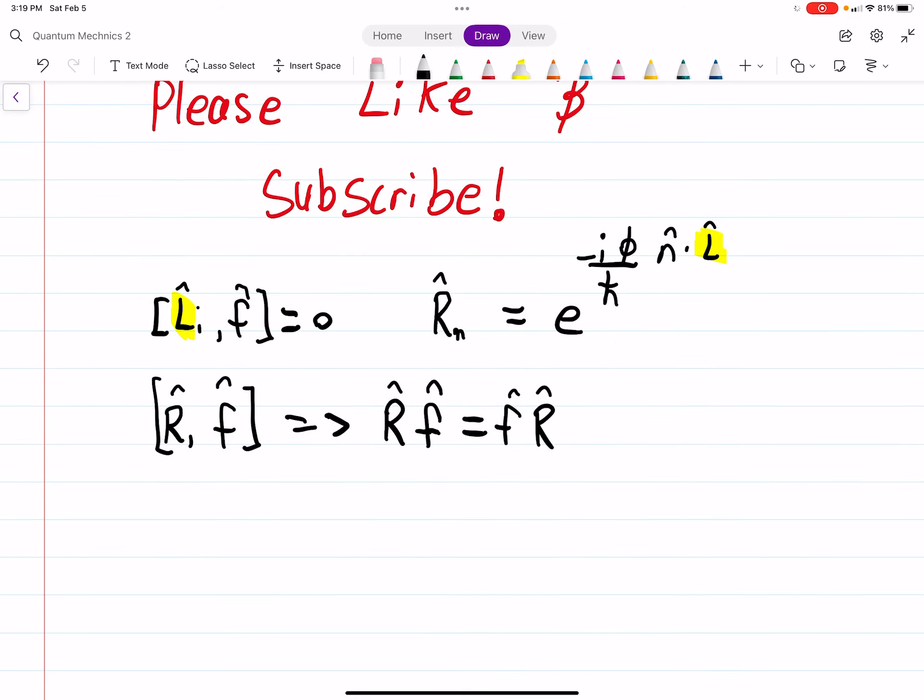So we're going to do r dagger r f equals, and to keep the equation equal, r dagger f r. And just like before, r dagger r is just 1. So then we get f, that's all that's left, is equal to r dagger f r.